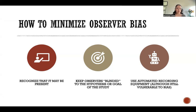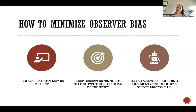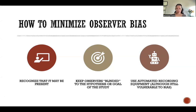A really great strategy, if it's available to you, is to keep the observers blinded to the hypothesis or goal of the study. If the person doing the observing doesn't know what the hypothesis is or what the goal of the study is, we're going to get much less biased observation. It can also help to use automated recording equipment, like setting up a video camera to record behavior, though this is still vulnerable to observer bias since the observer's bias might dictate where the camera is set up. Sharing that recorded data with multiple observers can help balance out the observer bias among different researchers.